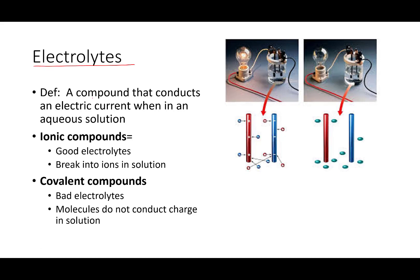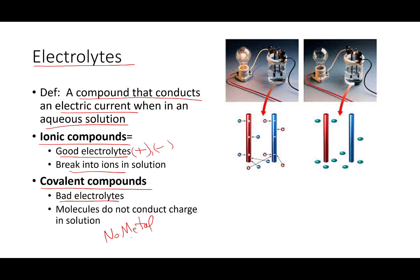Electrolytes are compounds that conduct electric currents when they are in an aqueous solution. Typically these are going to be ionically bonded compounds — these are good electrolytes. Why? Because they break into those ions, and ions are positive or negatively charged, meaning they are great at conducting electricity. Covalently bonded compounds are bad electrolytes — they're not going to conduct electricity well because they stay as molecules in solution rather than breaking into ions.